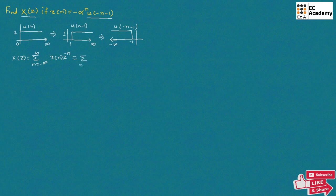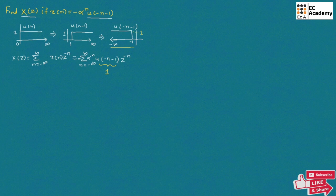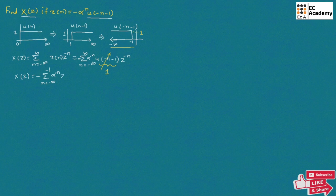So we can write this as summation of N is equal to minus infinity to infinity. For minus alpha, we can take minus outside the summation and write alpha to the power of N, U of minus N minus 1, Z to the power of minus N. We know U of minus N minus 1 is 1 from minus infinity to minus 1. So we can write X of Z as minus summation of N is equal to minus infinity to minus 1 of alpha to the power of N, Z to the power of minus N.